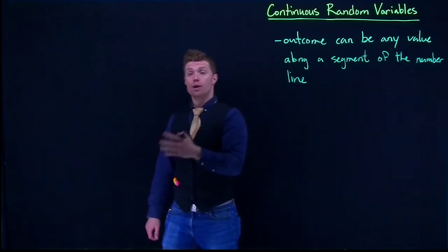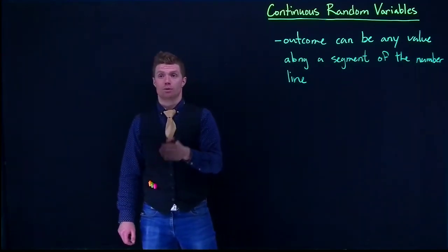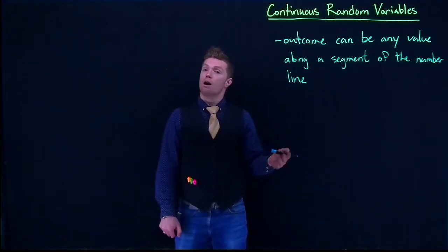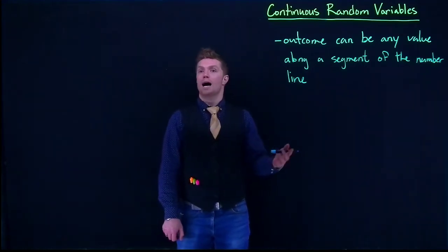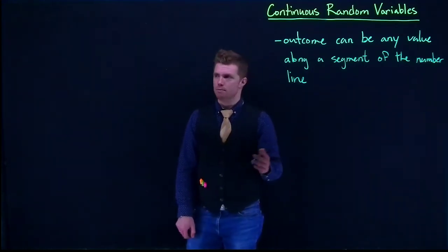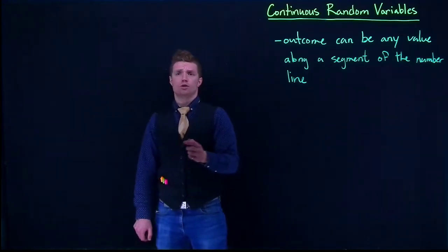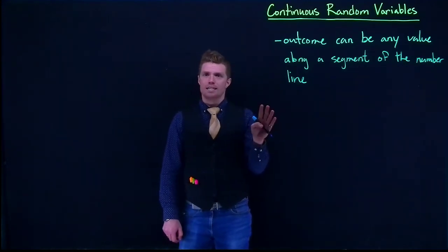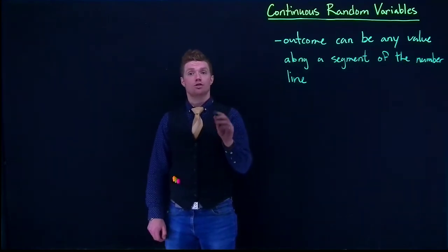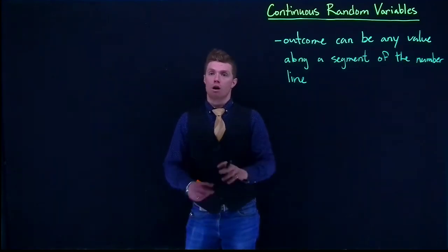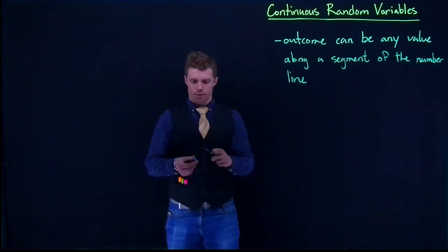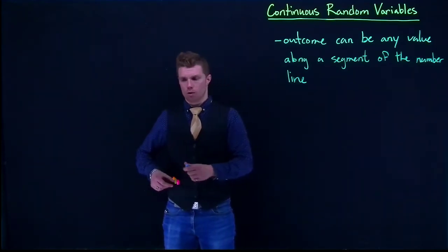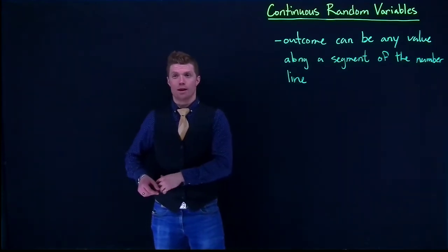Whereas with discrete random variables, there are only specific values that an outcome could possibly be. Let's start off by drawing the PMF of a uniform discrete random variable.